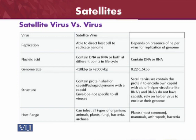Genomic size is totally different between both. A virus may be 10 kb to 2000 kb, while satellite viruses are 0.22 to 1.5 kb. Structurally, viruses contain protein shells or capsids packaging their genome. Satellite viruses encode their own capsid protein, but some do not form a capsid and instead rely on the helper virus to enclose their genome.